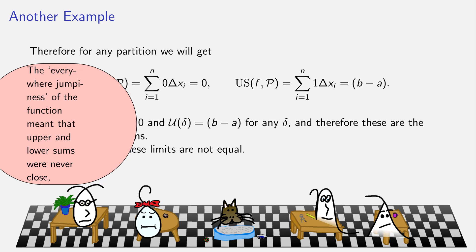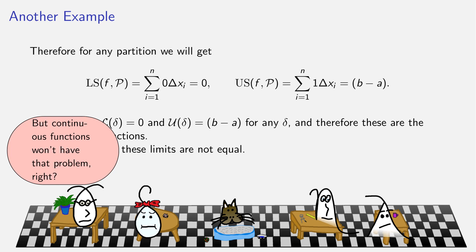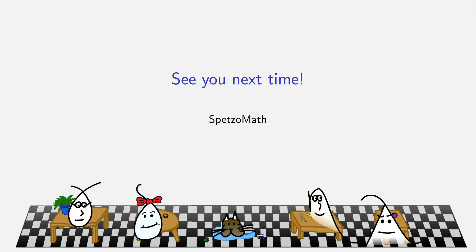What we're exploiting is that this function goes up and down a lot — seriously underselling it — jumping between zero and one infinitely often on any interval. So the upper and lower sums never have the opportunity to be close to one another. A continuous function won't have that problem; we'll actually see that a continuous function will be integrable, but that does take some work. In the next video, we'll address a different definition of integrability: the more familiar Riemann integrability.